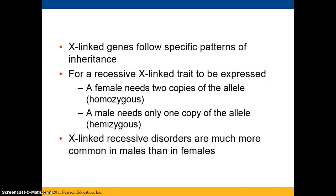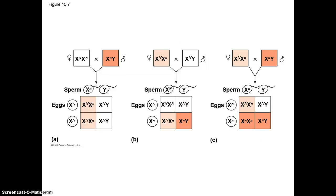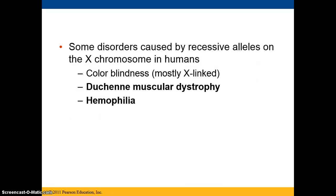In X-linked recessive disorders, any X-linked recessive disorder is going to be much more common in males than in females. You can see the various combinations and the frequencies with which males and females inherit these disorders. Some disorders caused by recessive alleles on the X chromosome in humans are colorblindness, Duchenne muscular dystrophy, and hemophilia.